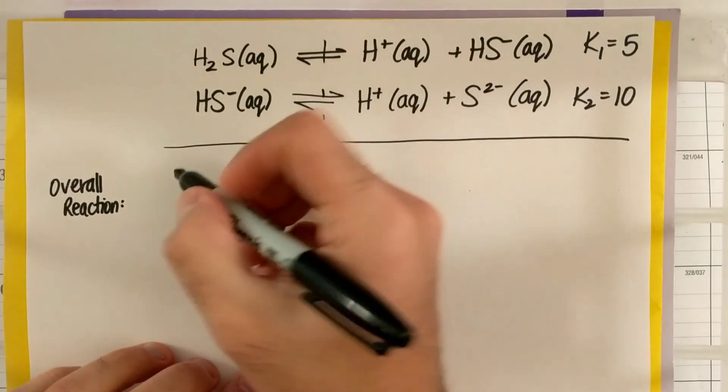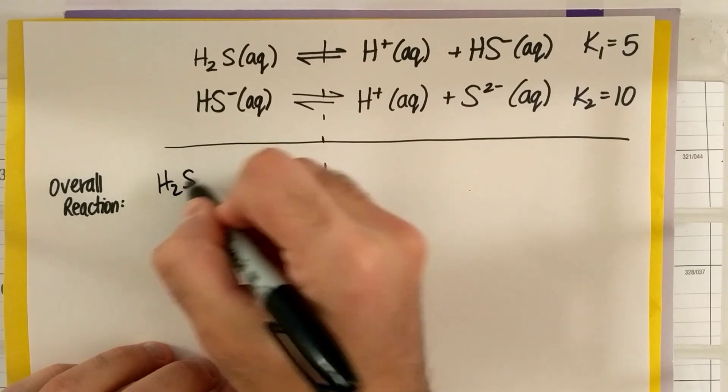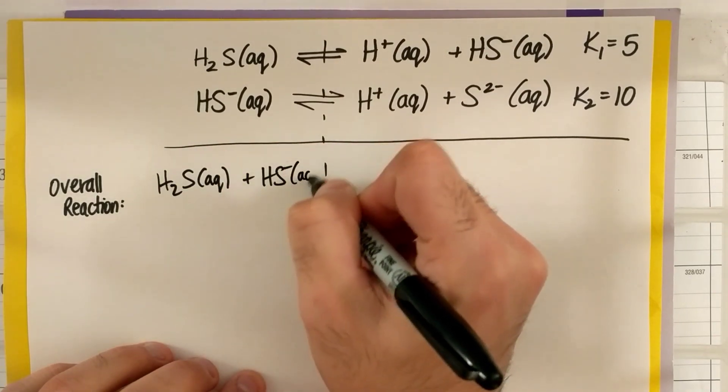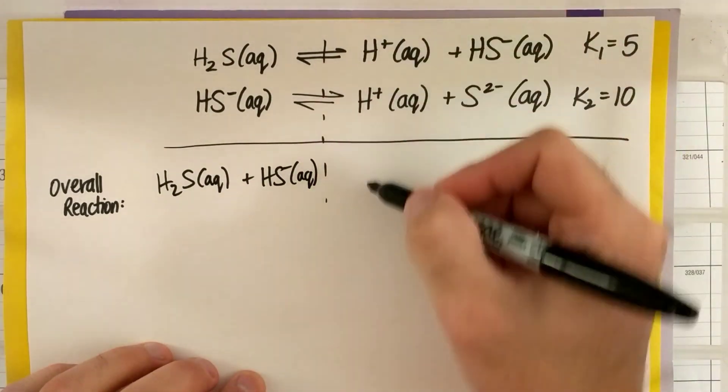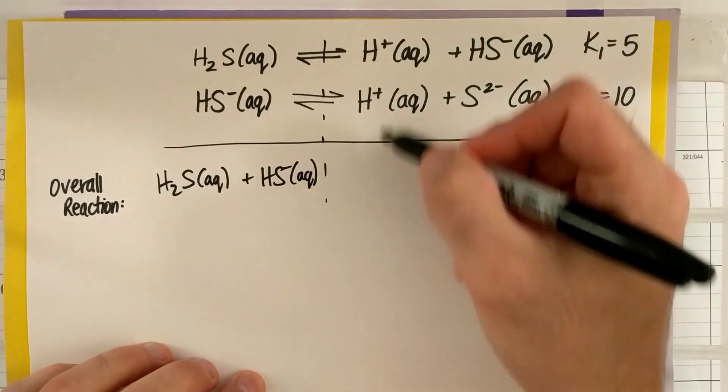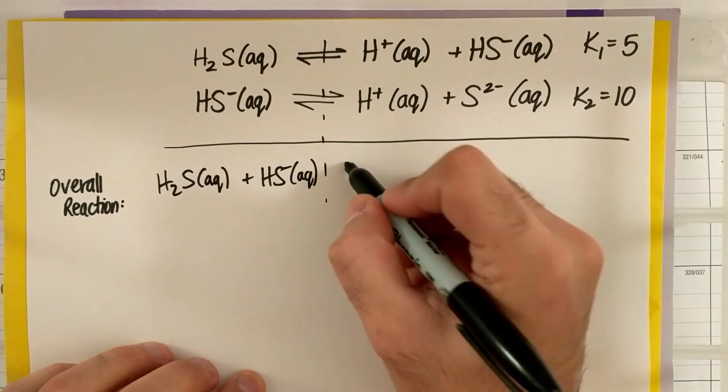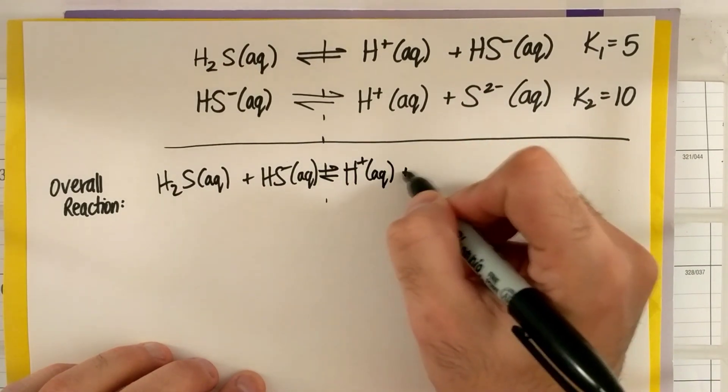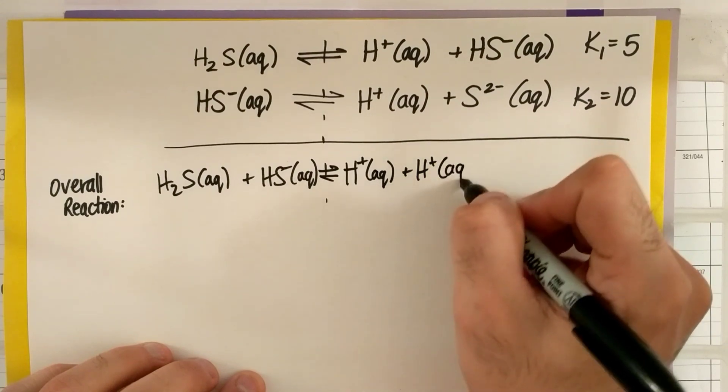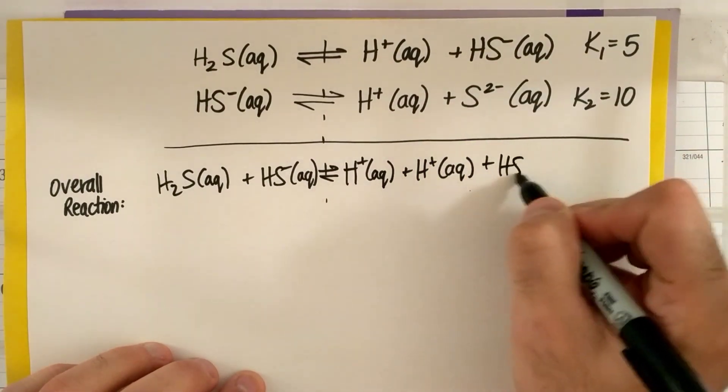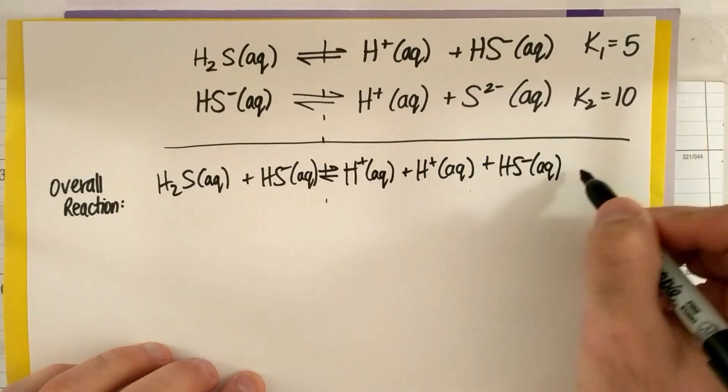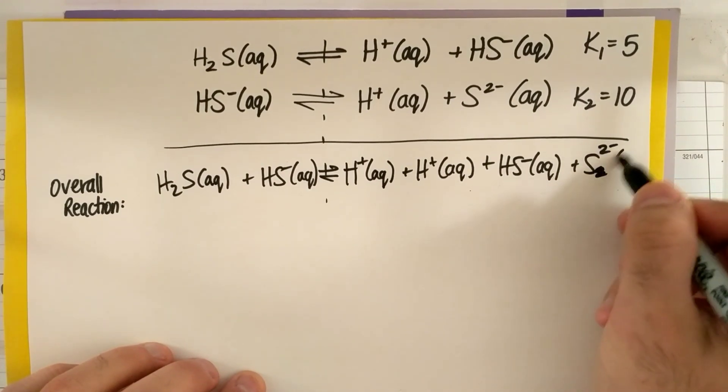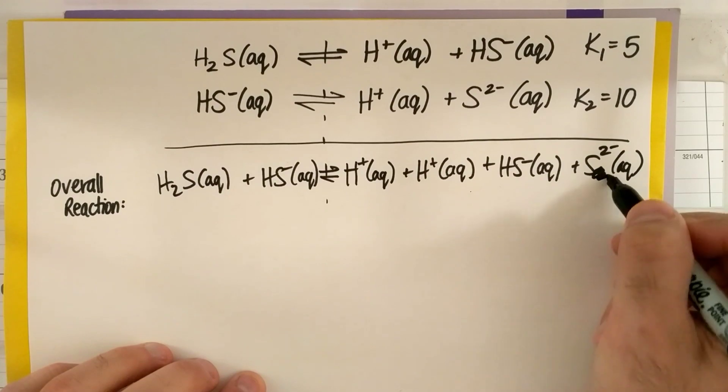So if I just add all my reactant side, I'll have H2S aqueous plus HS minus aqueous, and then I'll have this looks like it's two H plus. So in equilibrium with H plus aqueous plus H plus aqueous, plus HS minus aqueous, plus S2 minus aqueous.